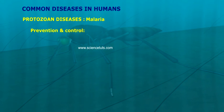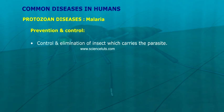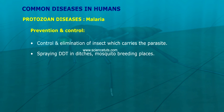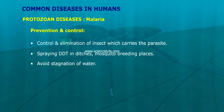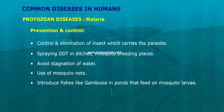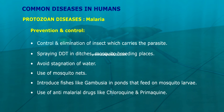Prevention and control: Control and elimination of the insect carrier. Spraying DDT in ditches and mosquito breeding places. Avoid stagnation of water. Use of mosquito nets. Introduce fish like Gambusia in ponds that feed on mosquito larvae. Use of anti-malarial drugs like chloroquine and primaquine.